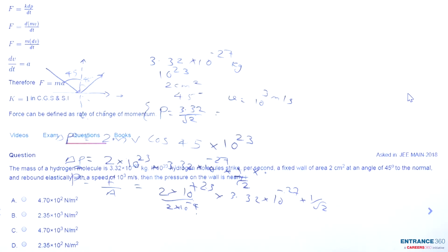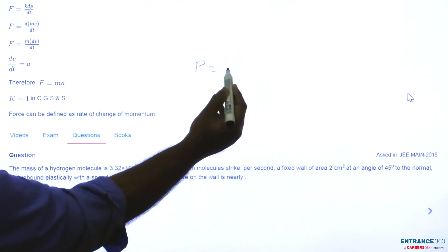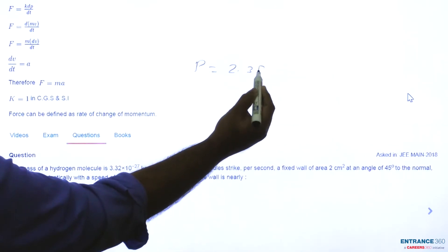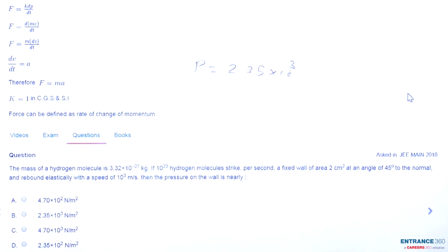The final answer for pressure P will be 2.35 × 10^3 newtons per square meter.